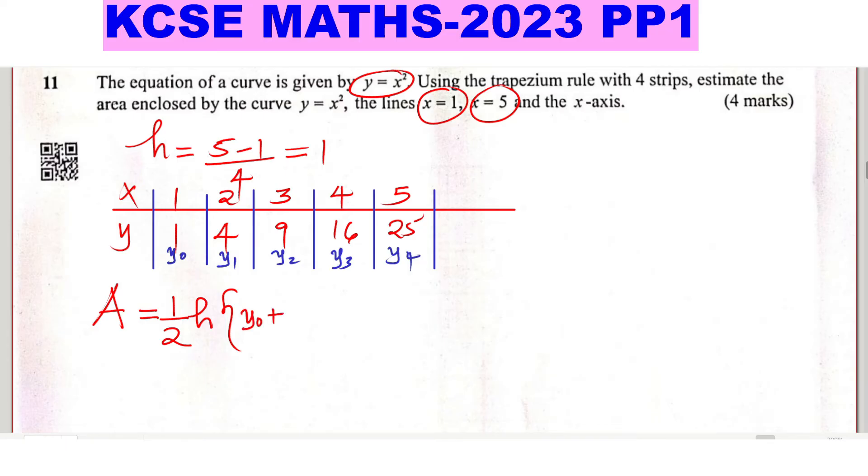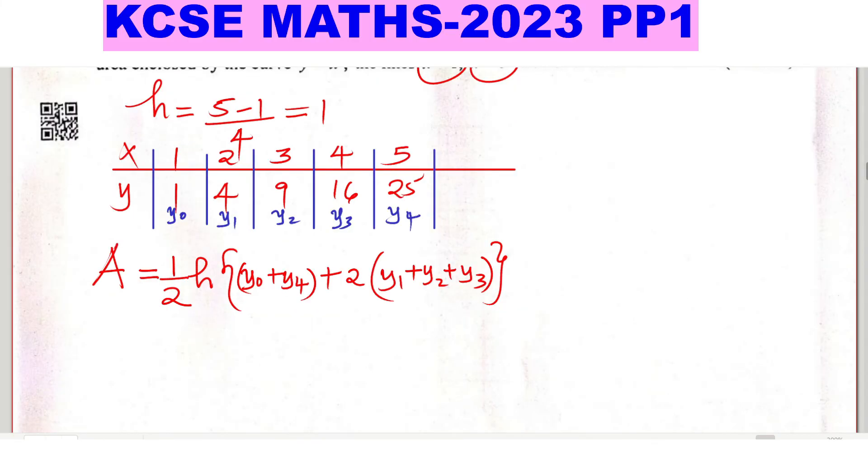Plus twice the middle values. The middles are from y₁, you add and get the sum of these middle values: y₁ plus y₂ plus y₃. Those are the middles. So let us substitute them in this formula.